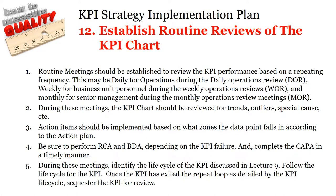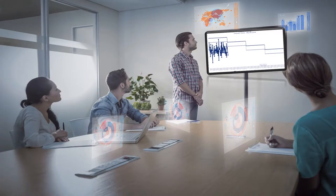Step 12: Establish routine reviews of the KPI chart. Although leading indicators should be reviewed at the GEMBA by operations, there are times when these KPIs will be reviewed in a meeting environment. The following should be established: Routine meetings should be established to review KPI performance based on a repeating frequency — this may be daily for operations during the daily operations review, weekly for business unit personnel during the weekly operations reviews, and monthly for senior management during the monthly operations review meetings.